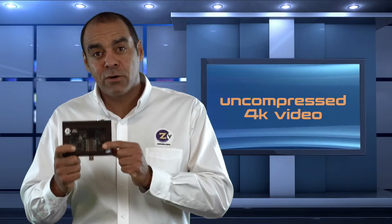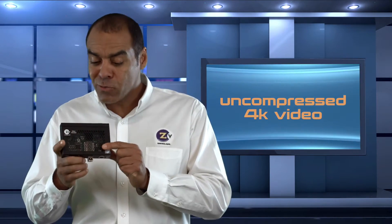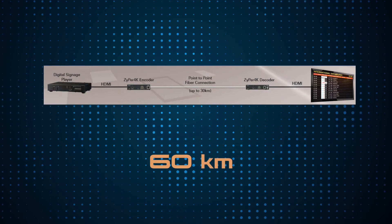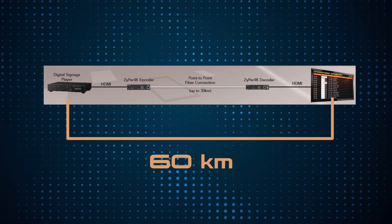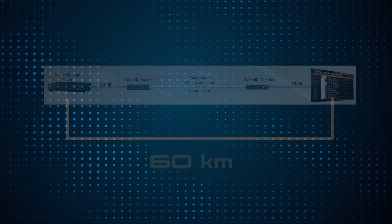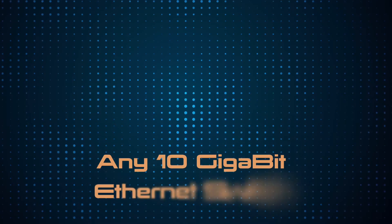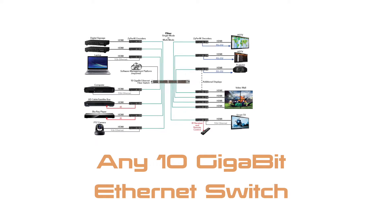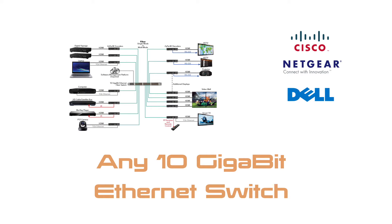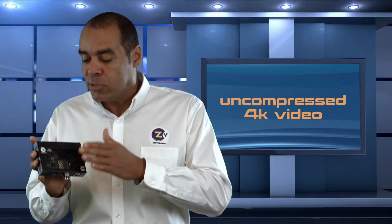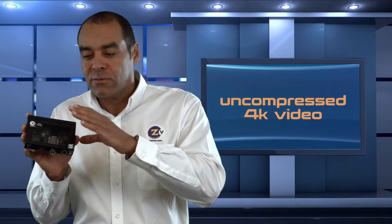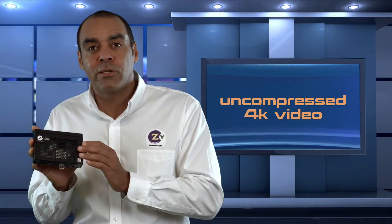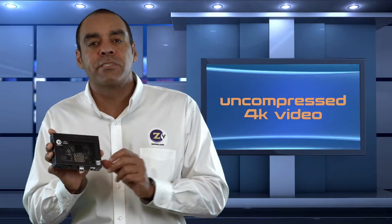The Zypher 4K is an uncompressed 4K video distribution system. It can truly achieve great distances — up to 60 kilometers between the source and the display. What makes the Zypher 4K system very special is that you can use any off-the-shelf 10 gigabit network switch. Whether it's Cisco, Netgear, or Dell, it doesn't matter. We are switch agnostic. As long as it's a 10 gigabit network switch, you can use the Zypher system to send 4K uncompressed video between source and display up to 60 kilometers.